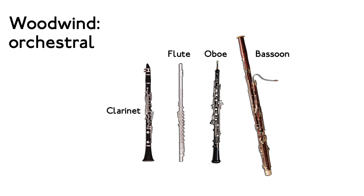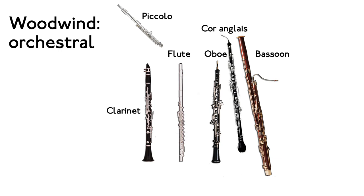Often extra woodwind instruments are used in orchestral music to give a wider range of pitches and timbres. The small version of the flute plays an octave higher and is called a piccolo, which literally means 'small' in Italian. The cor anglais is like an oboe but a little bigger, so it plays lower notes. Notice the bulge in its shape at the bottom and the curved crook at the top end — this is how the cor anglais got its name. It literally means 'English horn,' but there's actually nothing English about it; the name is a corruption of the word 'anglais' meaning 'angled,' referring to the crook that the reed goes in.